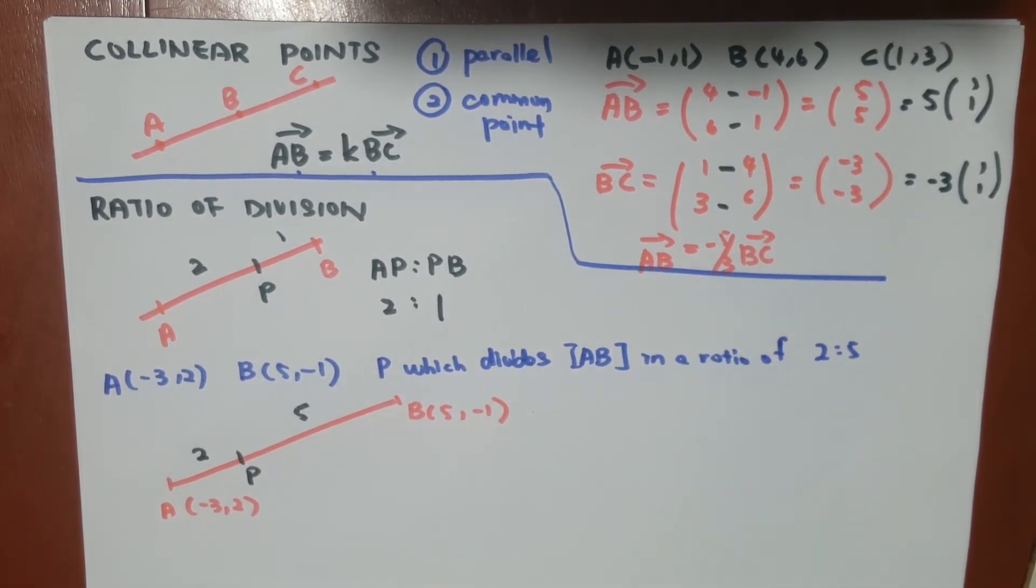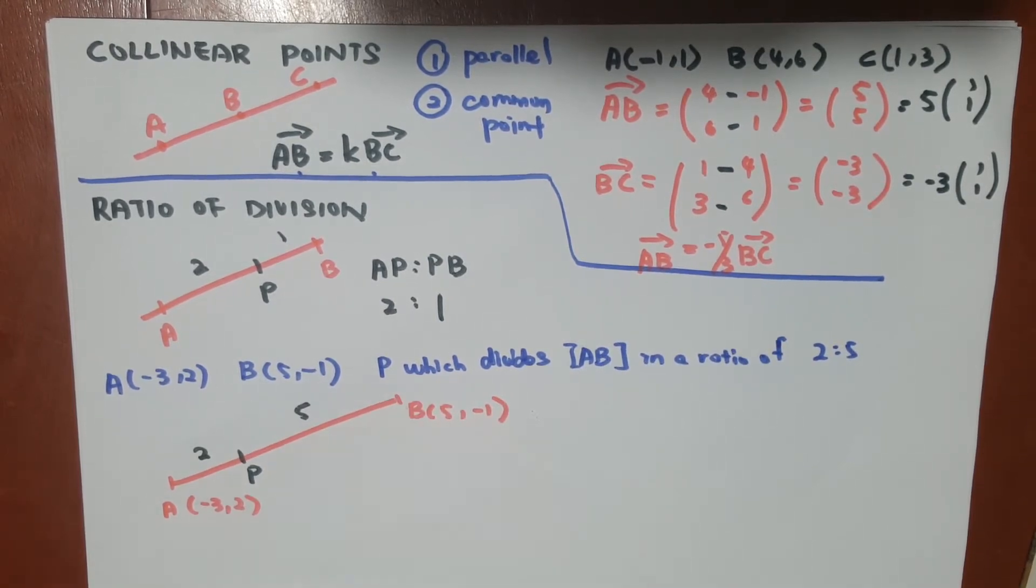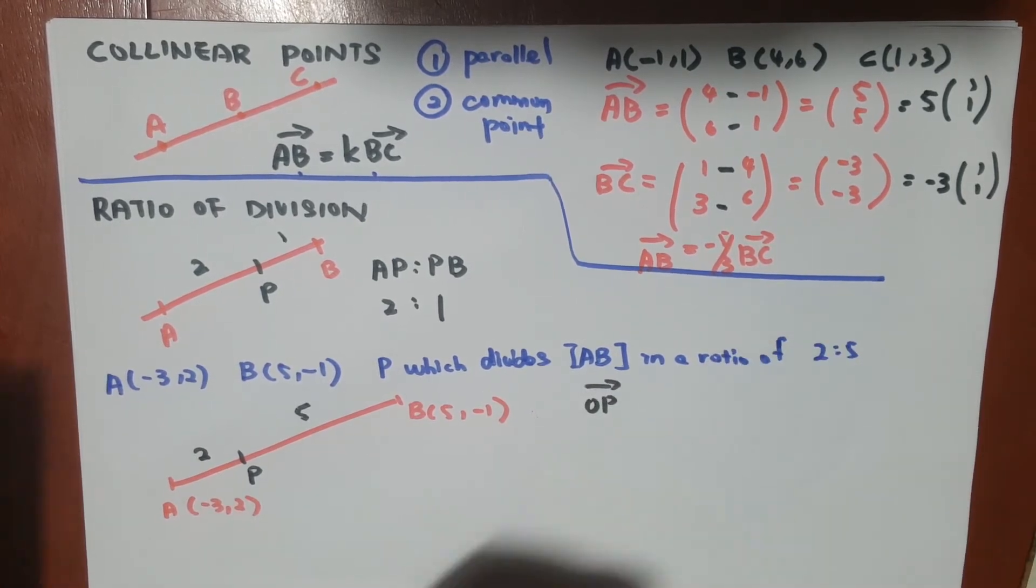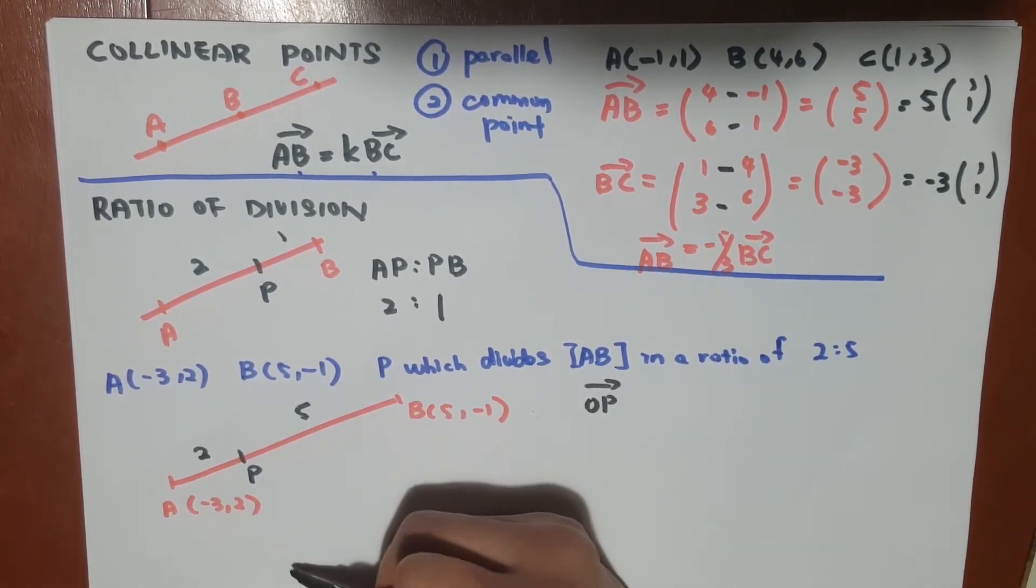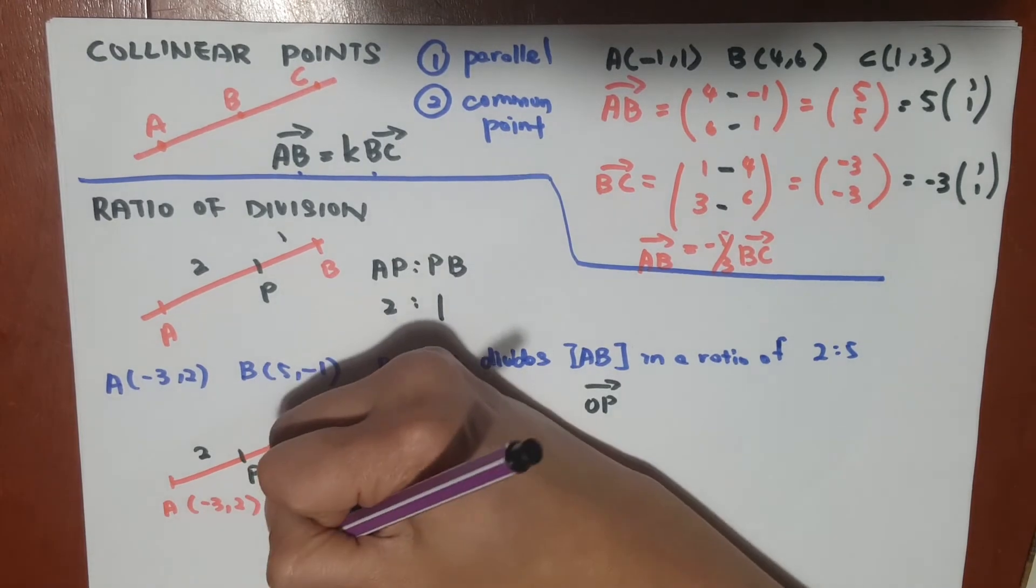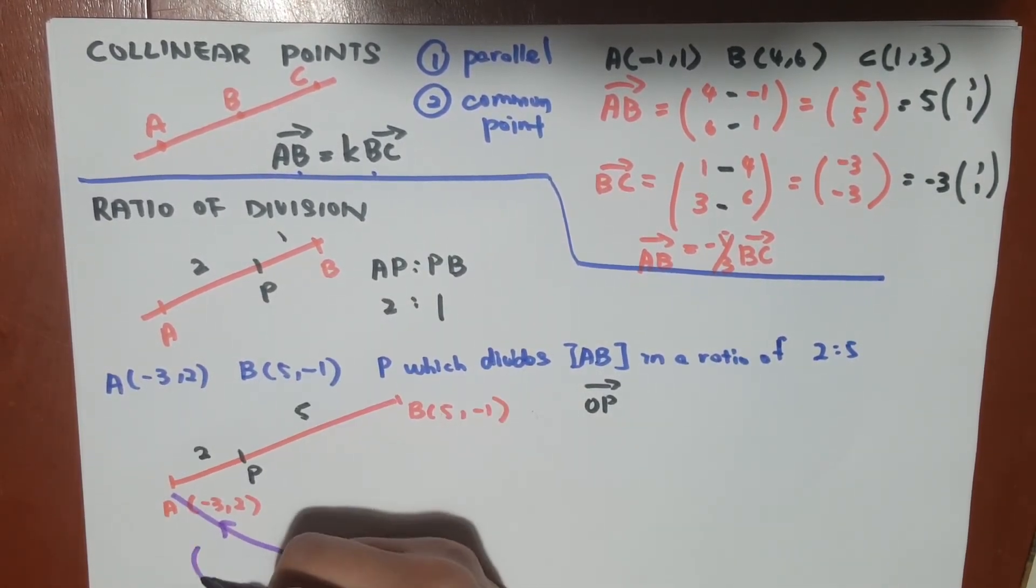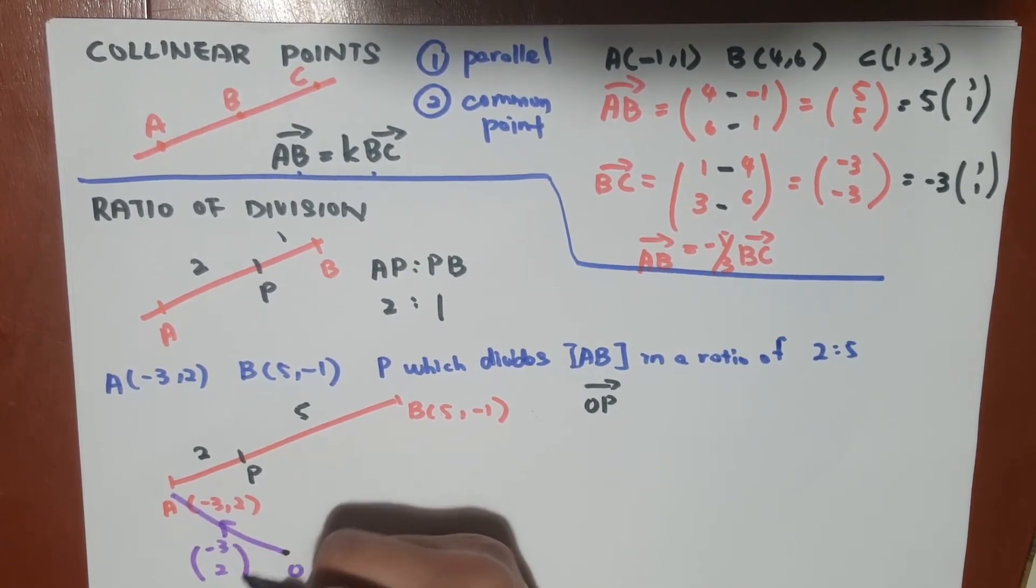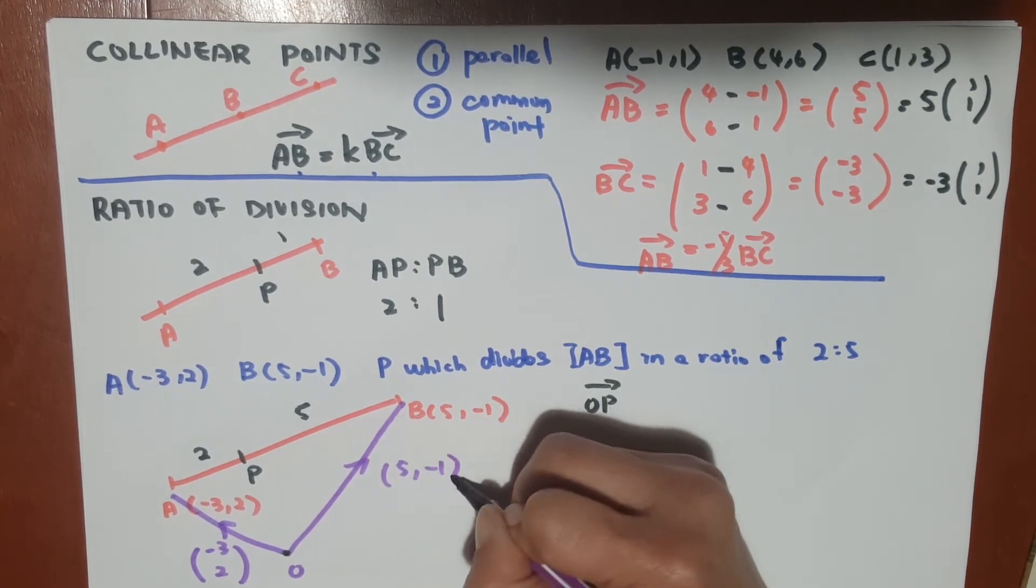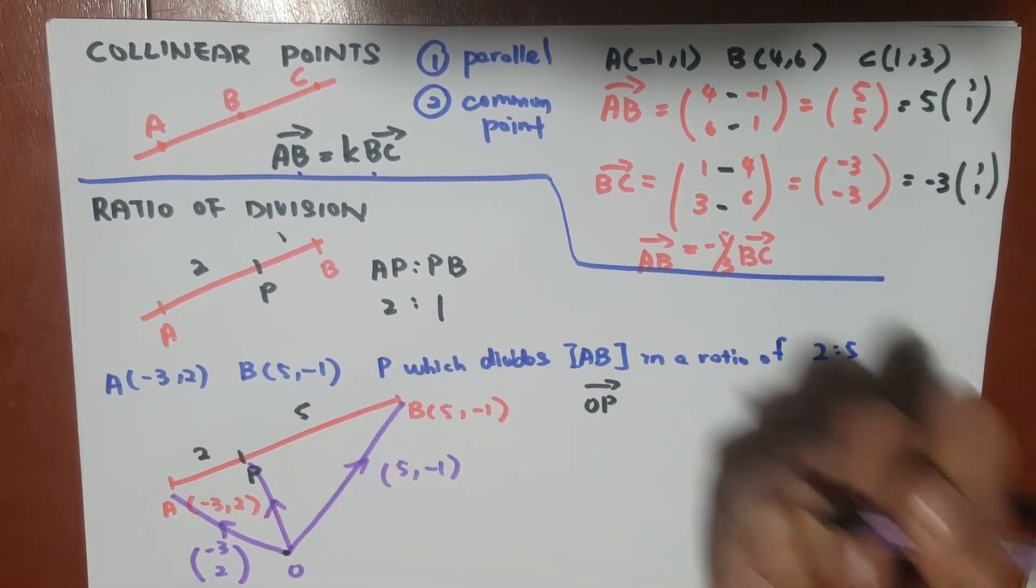In order for us to find the point P, P is a coordinate, so we need to be considering what is OP. Let's say we have a point O, which is here. We know that OA is actually a vector of (-3, 2). OB is a vector that's (5, -1). And to get P, we need to figure out what's OP.